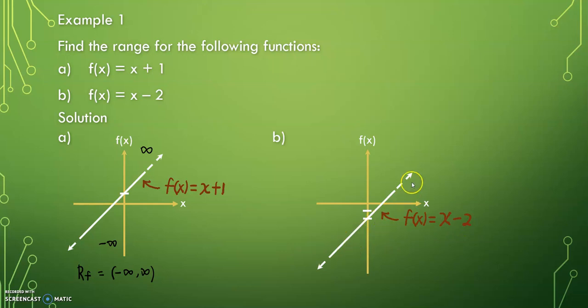Again, the graph keeps going on both directions, same as question a. So the range will be equal to negative infinity to positive infinity.